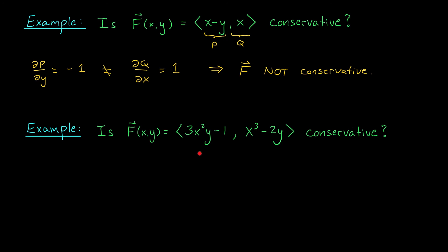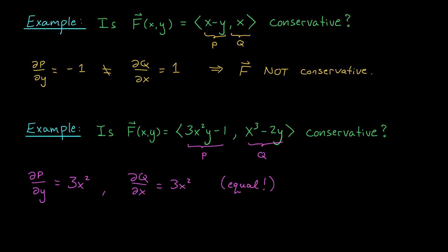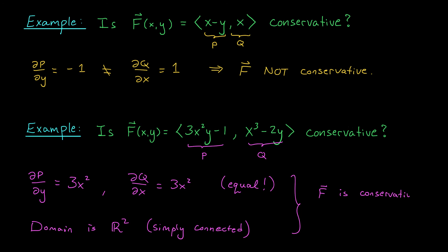In our second example, we're dealing with a different vector field, and again we want to know if it's conservative. We look at ∂P/∂y and ∂Q/∂x, and find that both equal 3x². The derivatives match up. We should also check that the domain is simply connected — there are no restrictions, so x and y can take any values from ℝ², which is connected with no holes, hence simply connected. Since the derivatives agree and the domain is simply connected, the component test says this vector field is conservative. Note that the component test does not tell you how to find a potential function — that's what we'll cover in the next video.